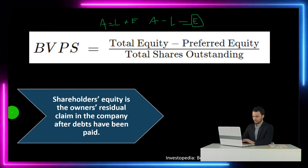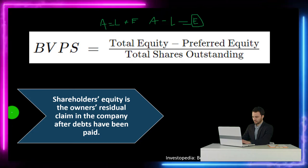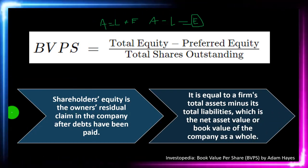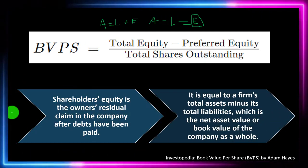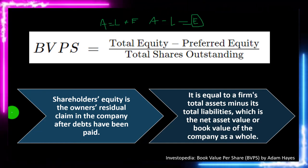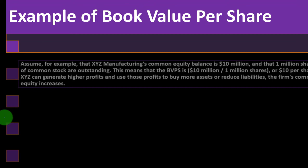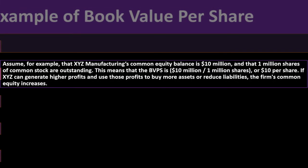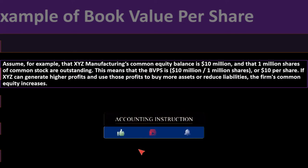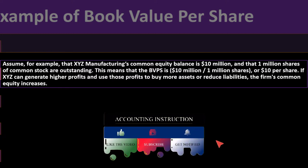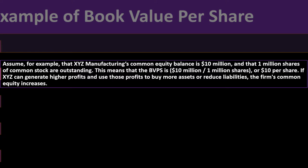Shareholders' equity is the owner's residual claim to the company after debts have been paid. It is equal to a firm's total assets minus its total liabilities — the net asset value or book value of the company as a whole. For example, assume that XYZ Manufacturing's common equity balance is $10 million and that 1 million shares of common stock are outstanding. This means the book value per share is $10 million divided by 1 million shares, or $10 per share.